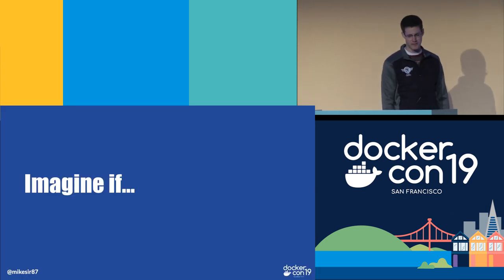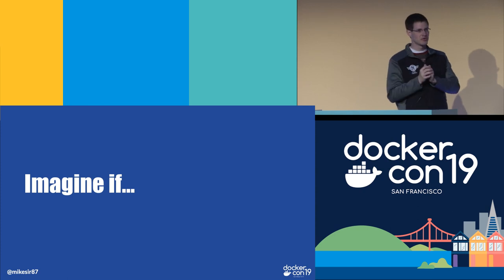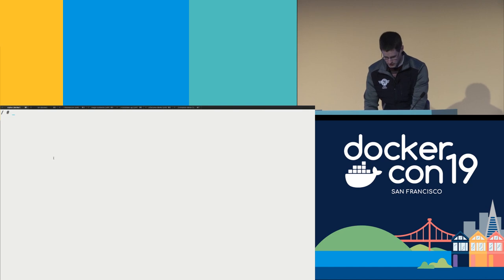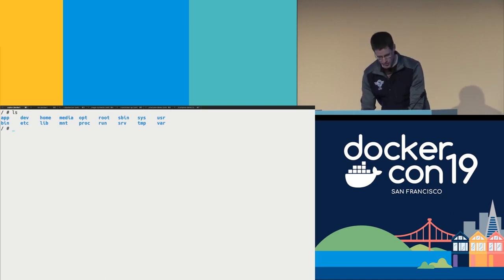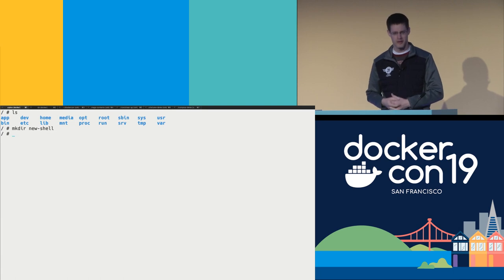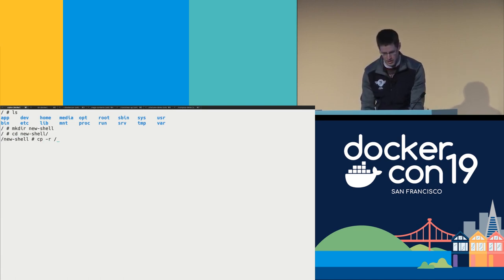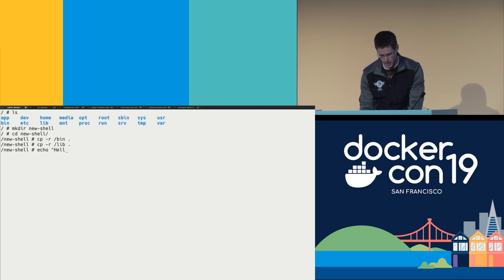I want to play an Imagine If game and do a demo. How many people have heard of chroot? I'm going to do a chroot demo here. What I've got is an Alpine container, and I'm going to make a new folder that will be a new root file system for a custom shell. Inside this directory, I'm going to copy the main bin directory and main lib directory, so I have all the normal binaries and libraries, and I'll echo 'hello there' to DockerCon.txt. Then I'm going to modify this and remove the rm command and the move commands.